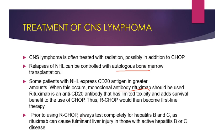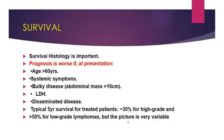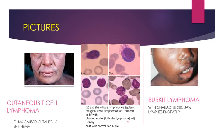Prior to using CHOP with Rituximab, we perform certain tests including hepatitis B and C screening, because Rituximab can cause pulmonary and liver injury, so we must check for hepatitis B and C beforehand.